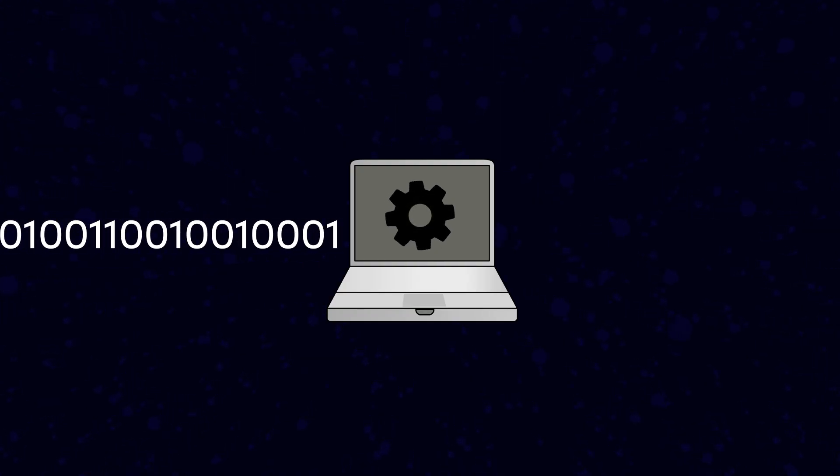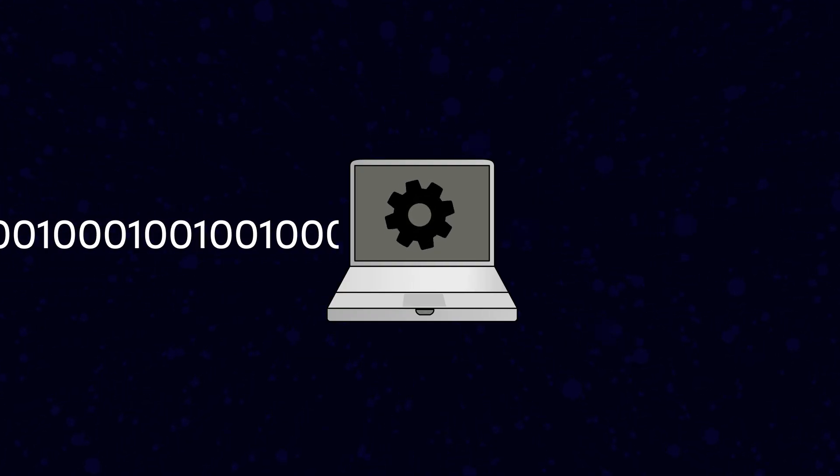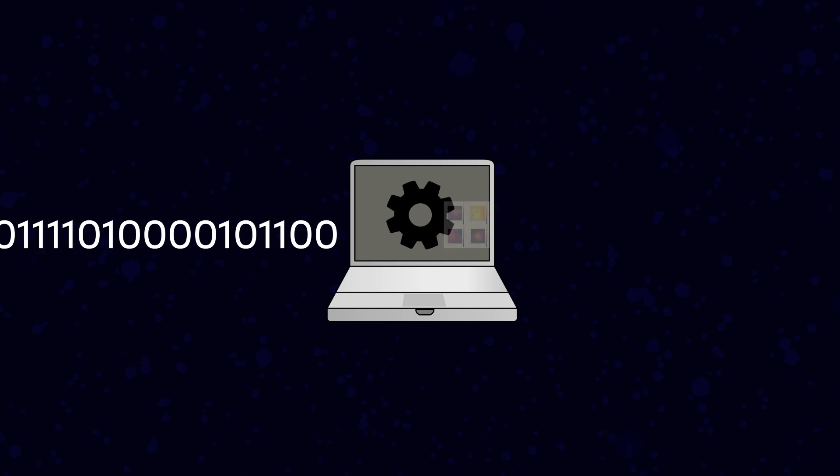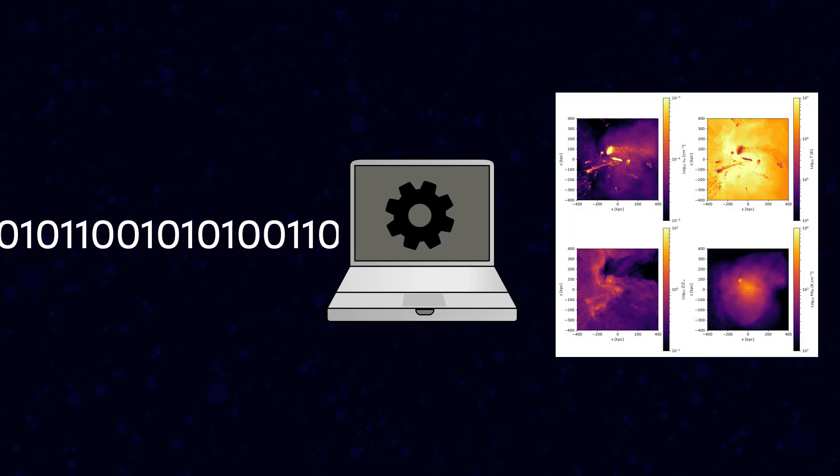So what I do is I use code that I've written in Python to load in my raw data, get it into a format I can then work with, and then use predefined Python functions to turn those ones and zeros into a beautiful image that I can then start to interpret.